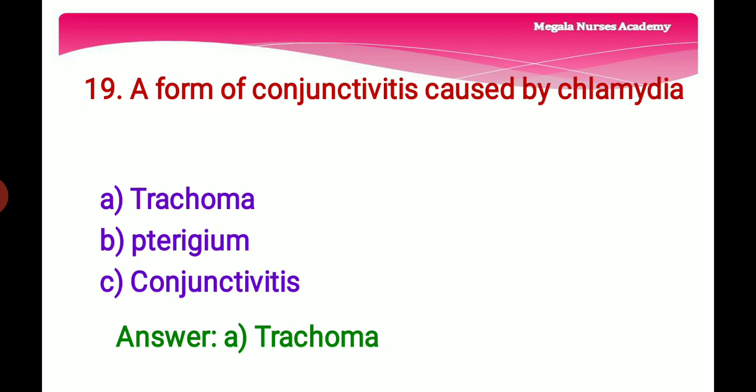Nineteenth question: A form of conjunctivitis caused by Chlamydia — Option A: Trachoma, a bacterial infection affecting the eyes. Option B: Pterygium, a growth on the clear tissues of the eye that can spread to the cornea, also called web eye. Option C: Conjunctivitis, inflammation of the conjunctiva. The right answer is Option A, trachoma, caused by bacterium Chlamydia trachomatis.